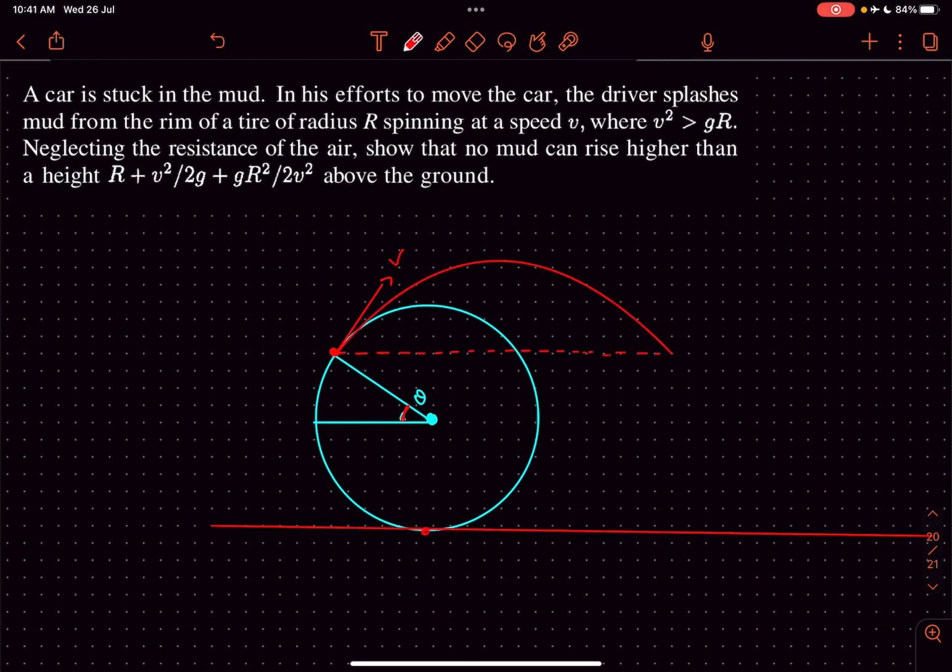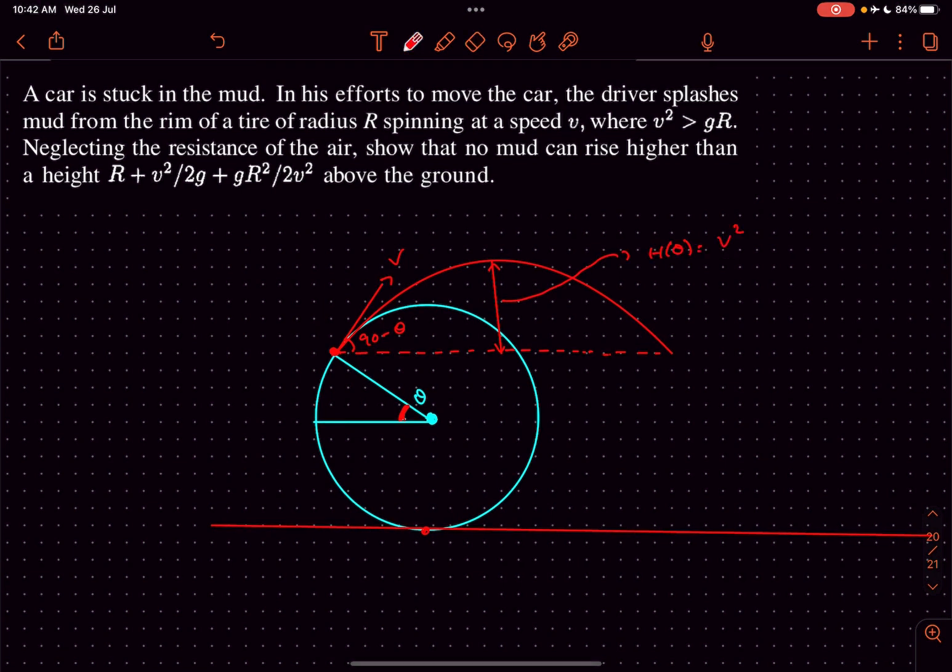If this angle is theta, then this angle is going to be 90 minus theta. Let's say the maximum height of this projectile is h, and the value of h is going to be v²cos²θ/(2g). Now this height over here is going to be r sin θ.